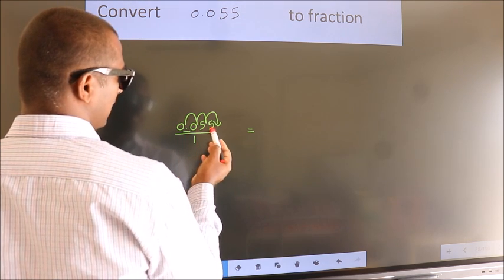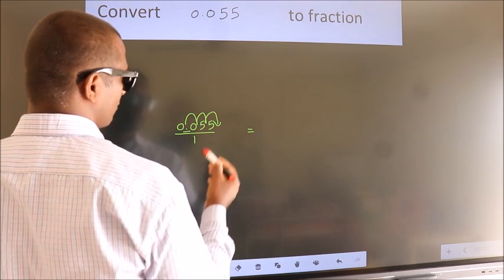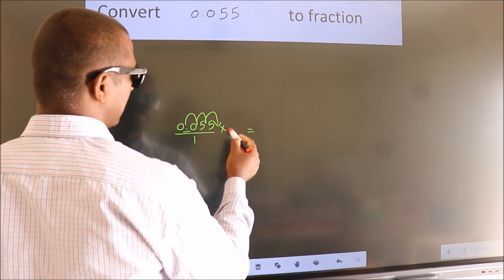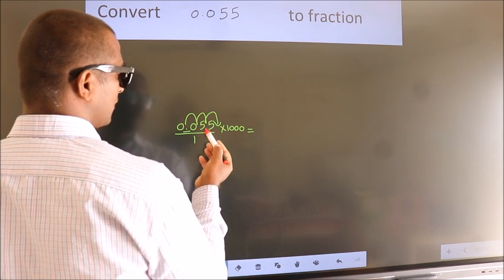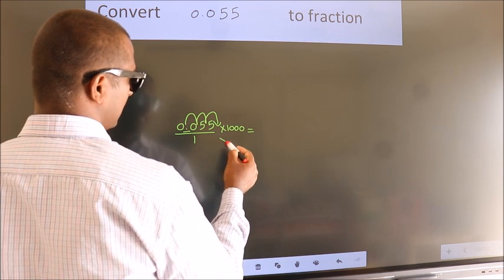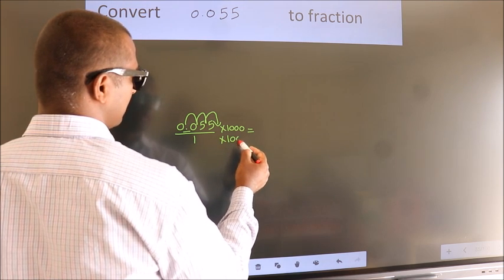To move this decimal after 3 numbers, for that we should multiply it with 1000. Whatever we are doing in the numerator, in the denominator also we should do the same.